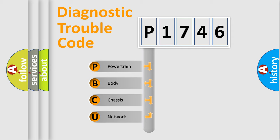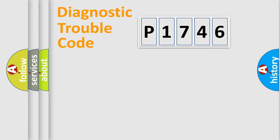We divide the electric system of automobile into four basic units: Powertrain, body, chassis, and network. This distribution is defined in the first character code.